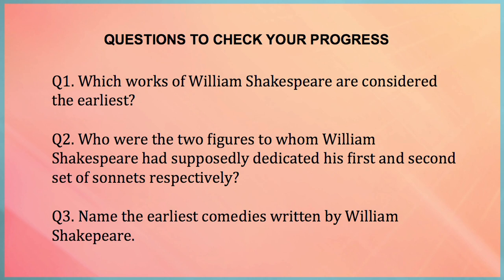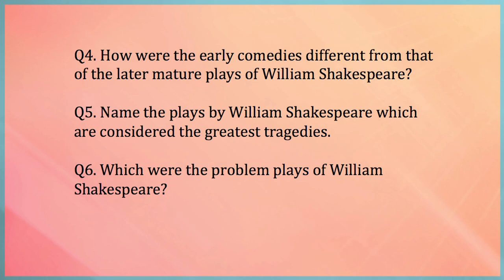We shall now quickly come to the questions to check your progress. Question 1: Which works of William Shakespeare are considered the earliest? Question 2: Who were the first two figures to whom William Shakespeare had supposedly dedicated his first and second set of sonnets respectively? Question 3: Name the earliest comedies written by William Shakespeare. Question 4: How were the early comedies different from the later mature plays? Question 5: Name the plays considered Shakespeare's greatest tragedies. Question 6: Which were the problem plays of William Shakespeare?